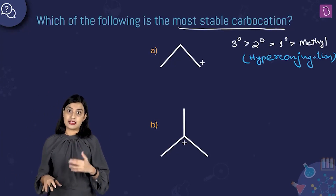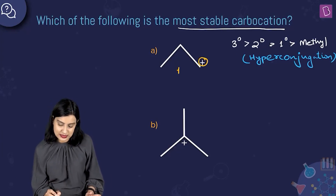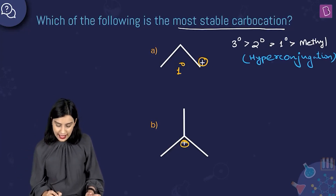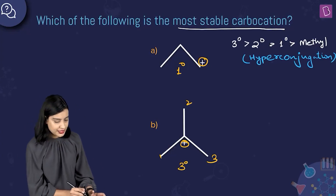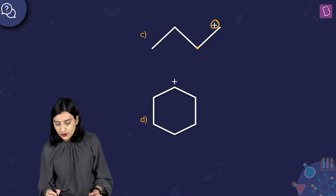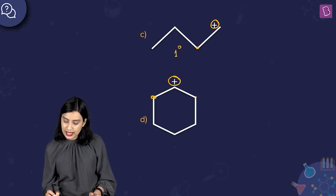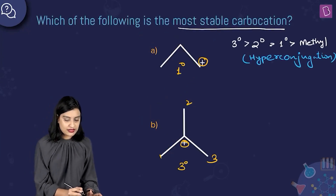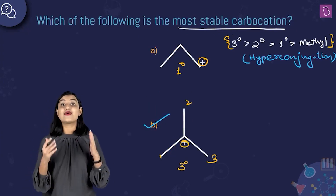Now let's see the nature of the given carbocations. Option A: the plus charge is here and this is a primary carbocation. Option B: the carbon with the plus charge has three carbons attached to it, so this is a tertiary carbocation. Option C: one carbon is attached to the carbon bearing the plus charge — again a primary carbocation. Option D: one and two carbon atoms are attached to the carbon with the plus charge — so this is a secondary carbocation. Since tertiary is most stable, option B is the right answer.